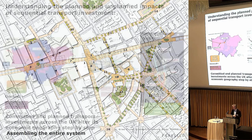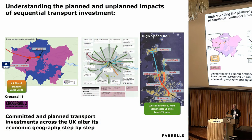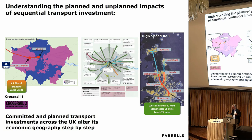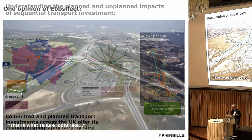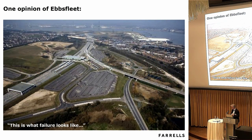So if we change gear now, the next lesson is that we've got lots of transport investment going on in the country, a lot of it affecting central London. But it's often funded and becomes certain in a sequential way. The map to the left is the accessibility given by Crossrail, in particular at Old Oak Common, which I'll talk about next. Added to that, we have high-speed rail. In terms of lessons, this is another example of sequential thinking not really working itself out.